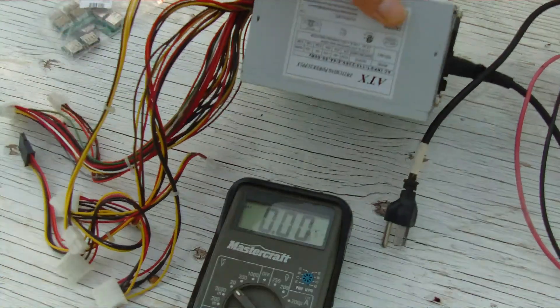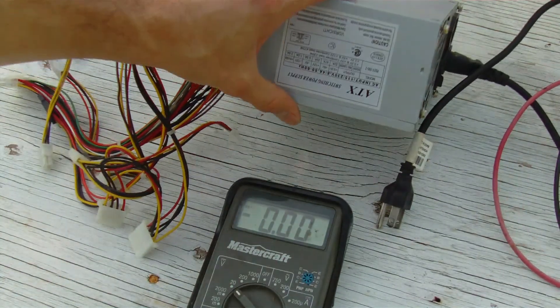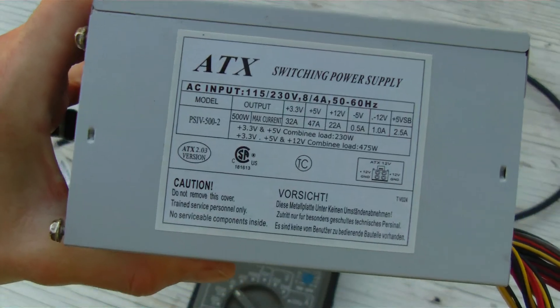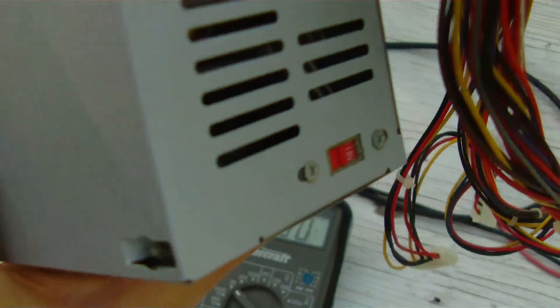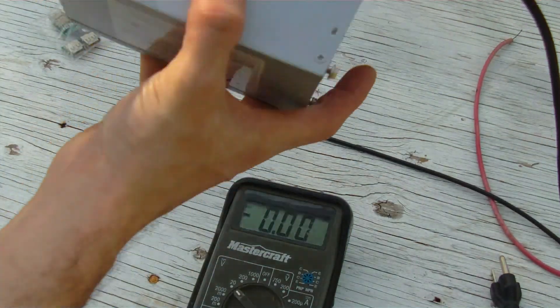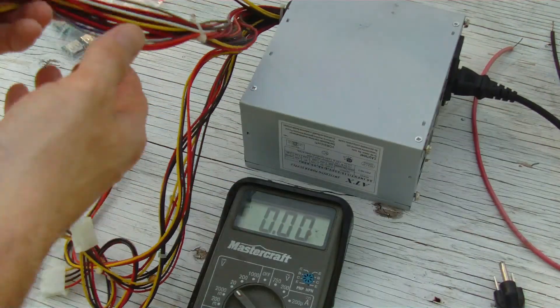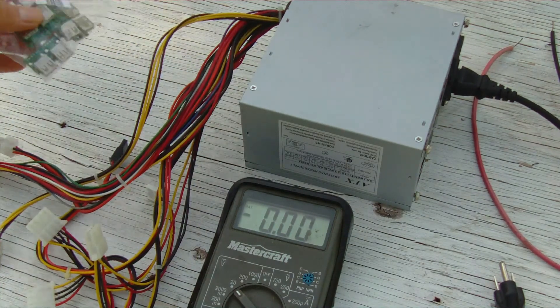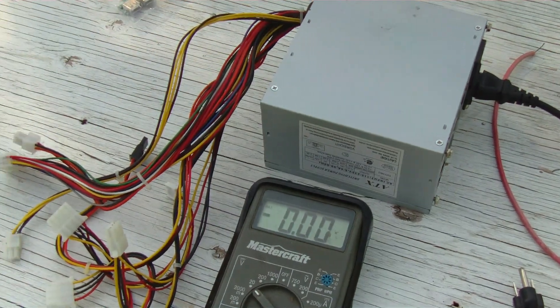So we have an ATX power supply here. Everyone has one of these laying around. Computer power supply. You can get these fairly cheap. You can get them used. You can find them in old computers. But what we want to do is we want to be able to use this as a power supply. You can cut these wires and just directly hook them to USBs or whatever you want to do, but there's an easier way.